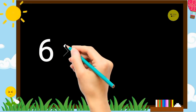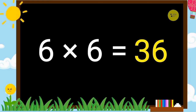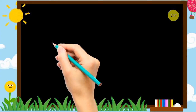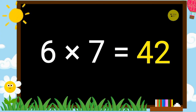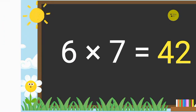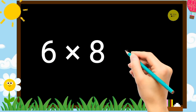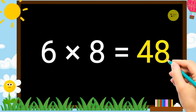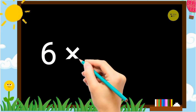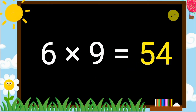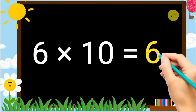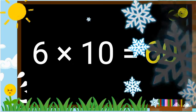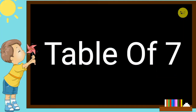6 6's a 36. 6 7's a 42. 6 8's a 48. 6 9's a 54. 6 10's a 60. Table of 7.